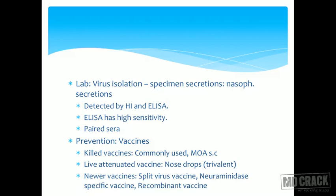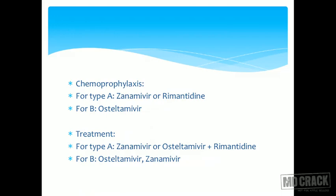Vaccines are available for influenza prevention, and developing them is an ongoing task. Killed vaccines are commonly used via subcutaneous administration. A recently developed live attenuated vaccine comes in the form of nose drops — probably the first vaccine marketed in nose drop preparation — conferring local immunity. Newer vaccines include split virus vaccine, neuraminidase-specific vaccine, and recombinant vaccine, with the trivalent nose drop vaccine being especially notable.